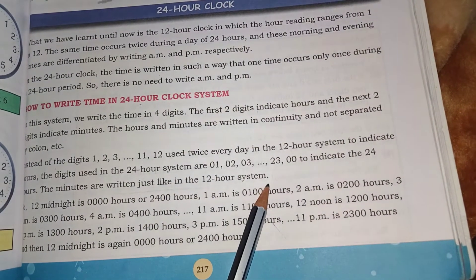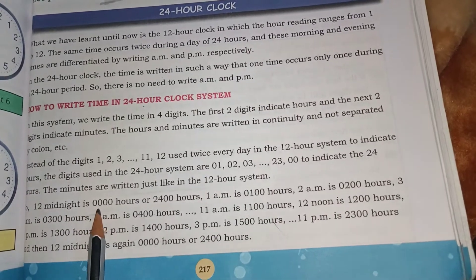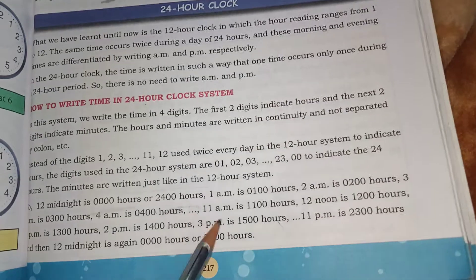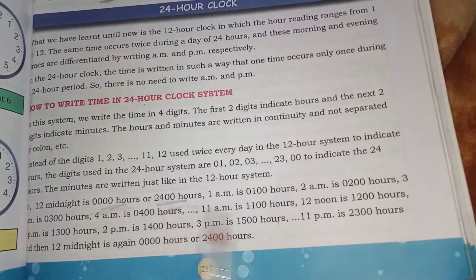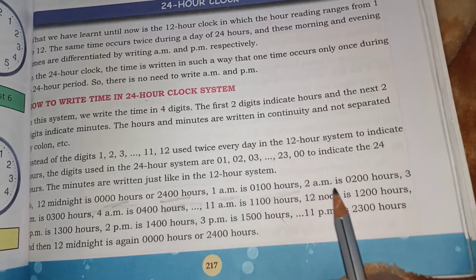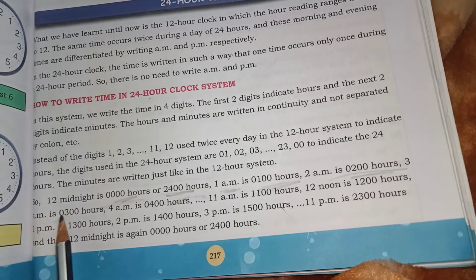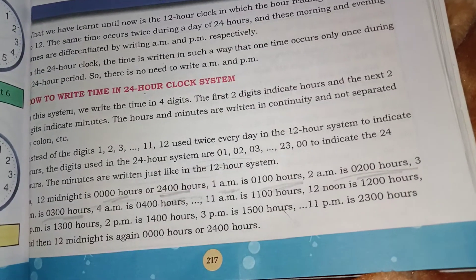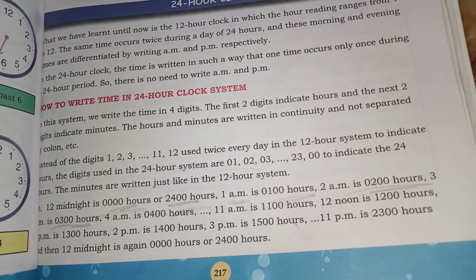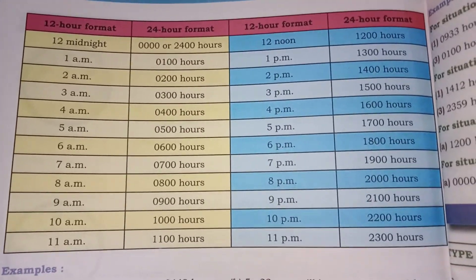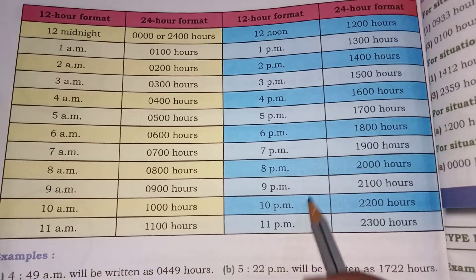The minutes are written just like the 12-hour system. 12 midnight means 0000 hours or 2400 hours — we can write both. 1 AM we write as 0100, 2 AM we write as 0200, 3 AM we write as 0300, and so on. The 12-hour format and 24-hour format examples are shown — AM and PM are all denoted with examples in the table.